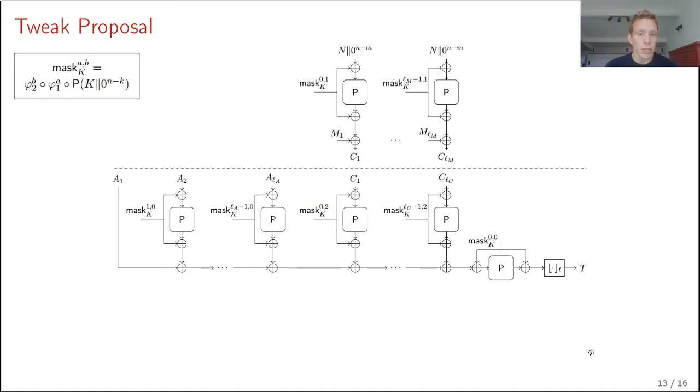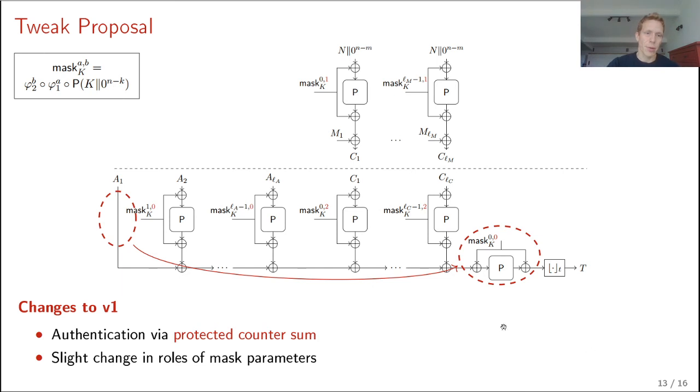And the tweak in a nutshell corresponds to these two changes. So one of the changes is that the permutation evaluation that was here for the first associated data block A1 is removed and it's moved to the end. So it's just a move of the permutation from one site to the other one. And the important thing of this is that we kind of move from a Wegman-Carter-Shoup authenticator to a Protected-Counter-Sum authenticator, which gives better security guarantees. The second change is a slight role of the mask parameters. And in particular, the value B in the masks. So here now for encryption, B is 1. For ciphertext, B is 2. And for associated data, B is 0. And that used to be 0 for encryption, 1 for ciphertext and 2 for associated data. We have done this just for aesthetic reasons because it looks nicer. It works. It is slightly nicer to implement if you have mask 0, 0 here.